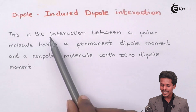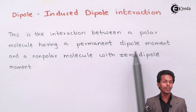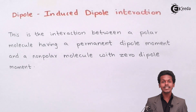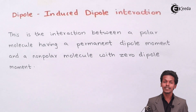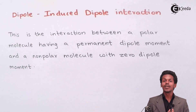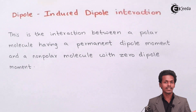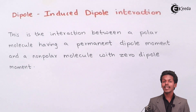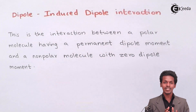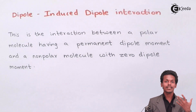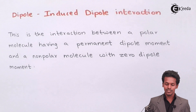This is the interaction between a polar molecule having a permanent dipole moment. Permanent dipole moment means these are molecules which have a partially positive charge and partially negative charge that can't be changed. For example, molecules like HCl, NH3, and H2O are said to have a permanent dipole moment because the positive and negative charges are in a fixed state — these molecules are polar in nature.